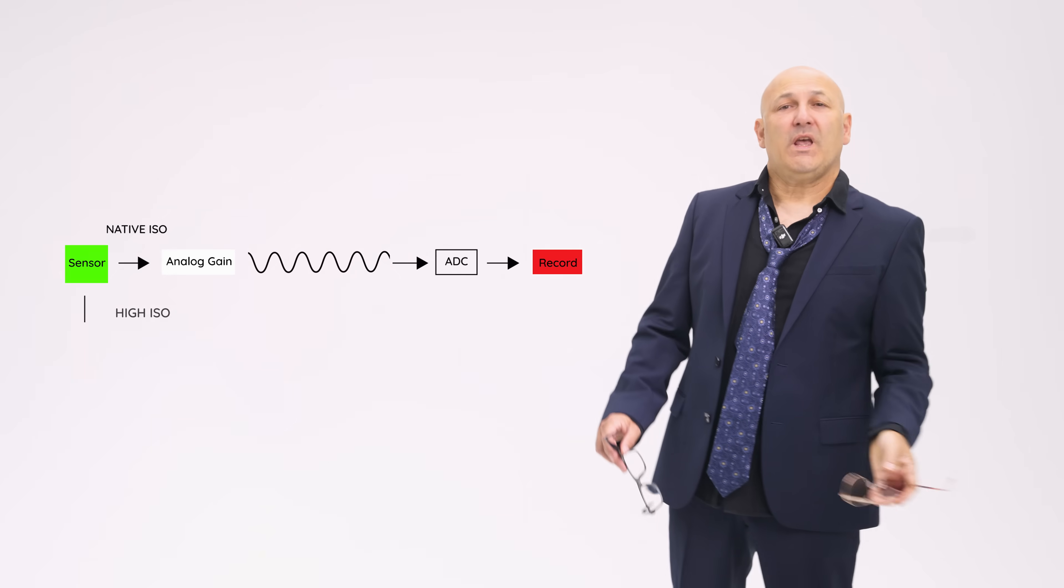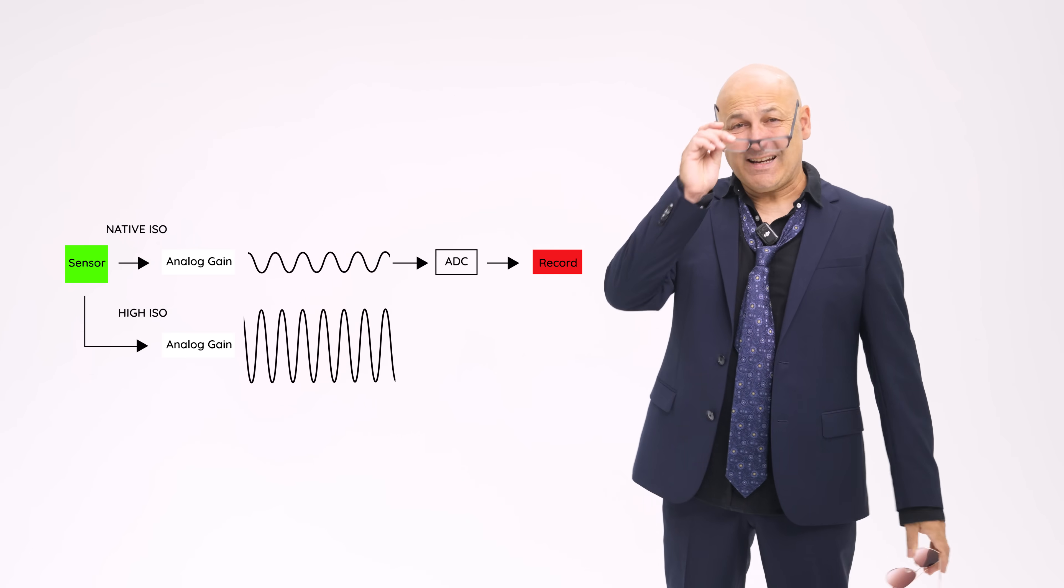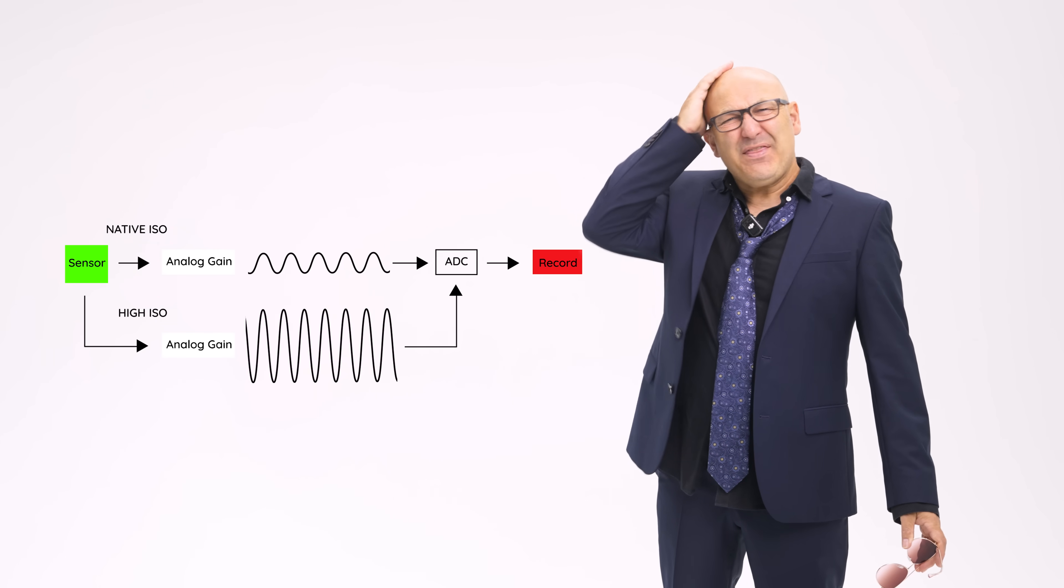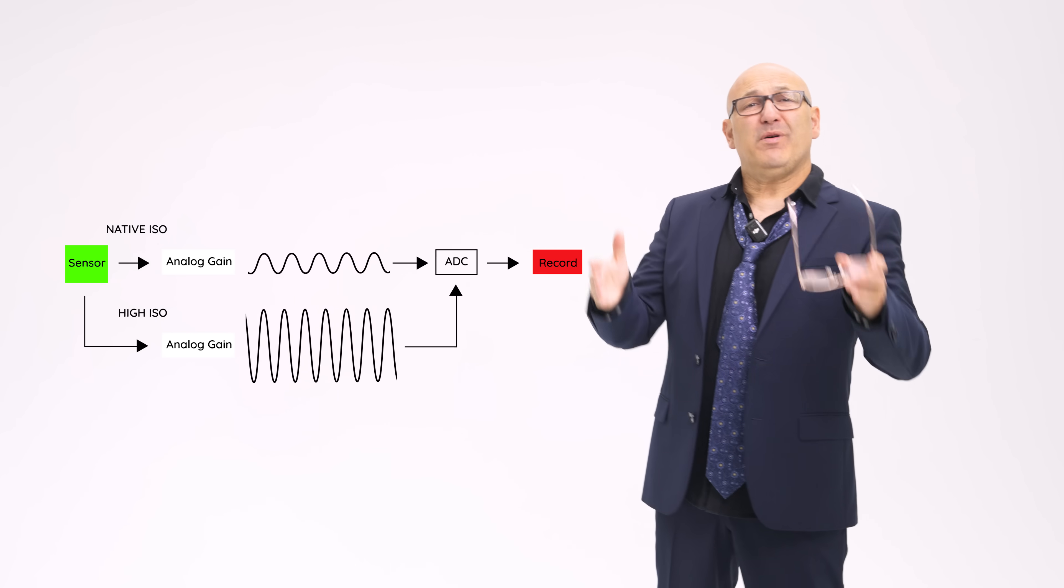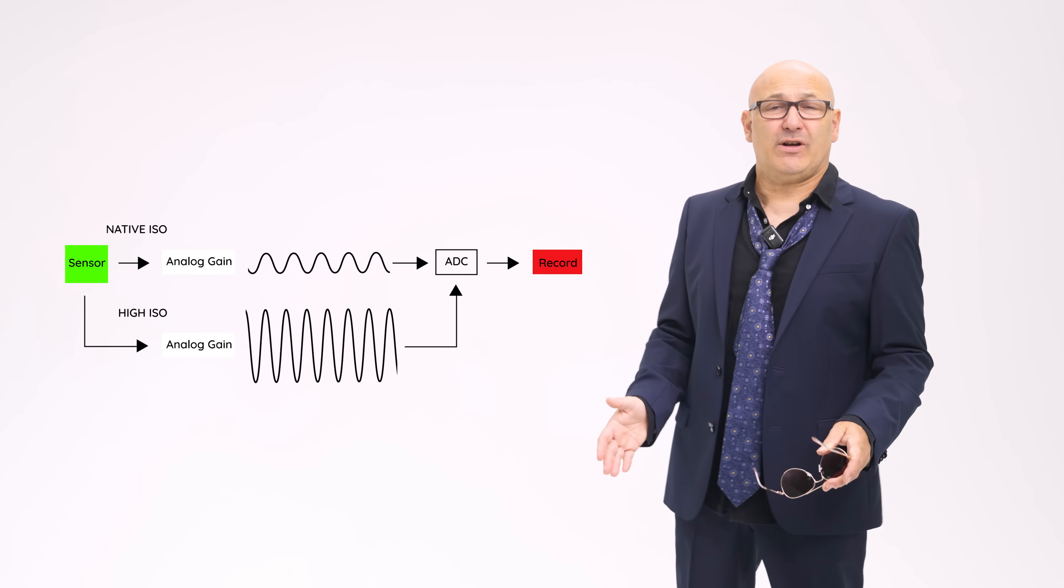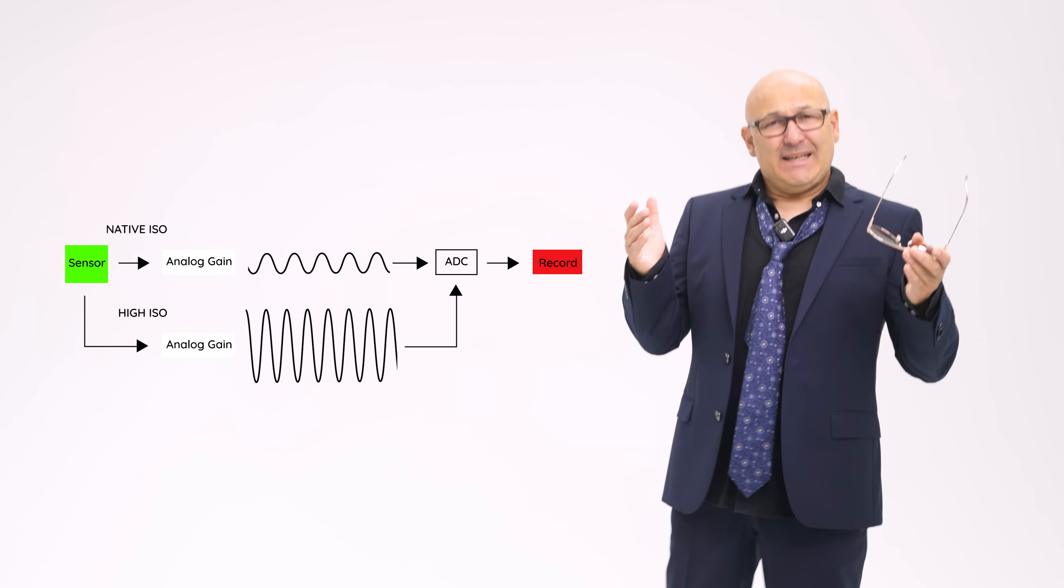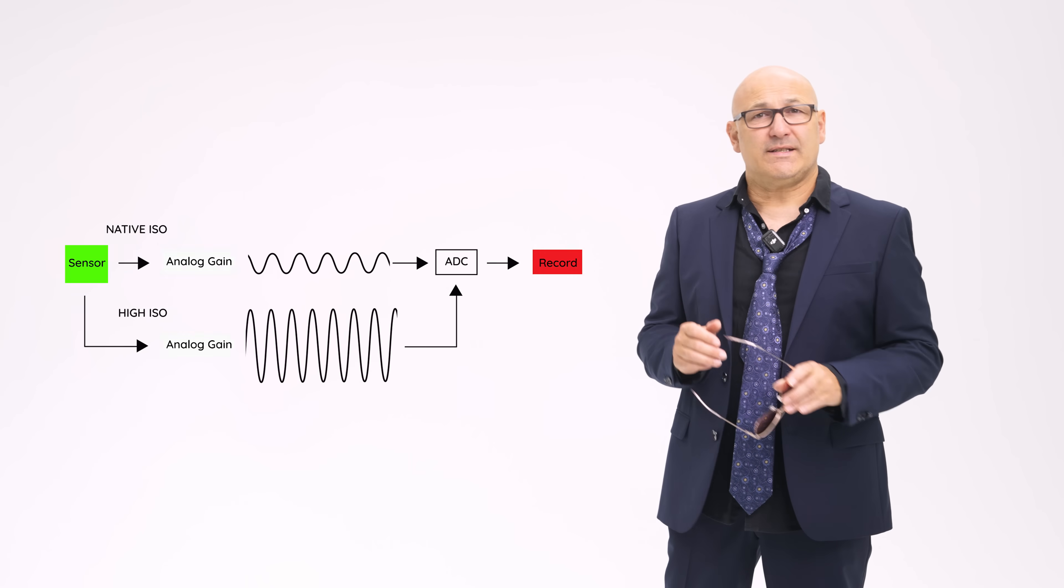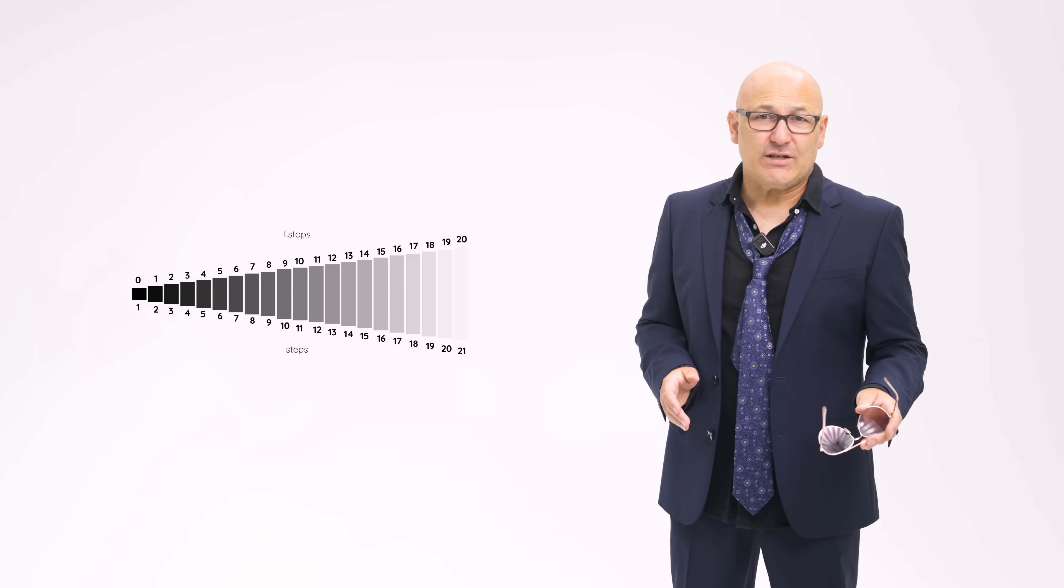So we have light going to the photo sites, conversion to an electronic signal, an analog to digital converter called an ADC, and then an amplification before quantization to numerical RGB values. The amplification process is a factor that causes noise, which also has an effect on dynamic range.